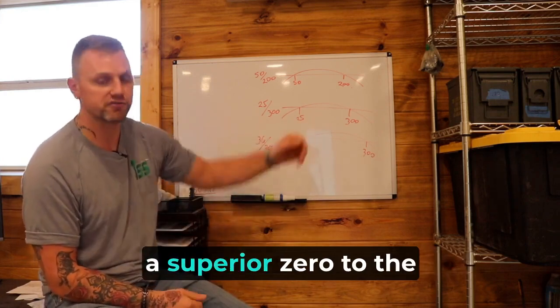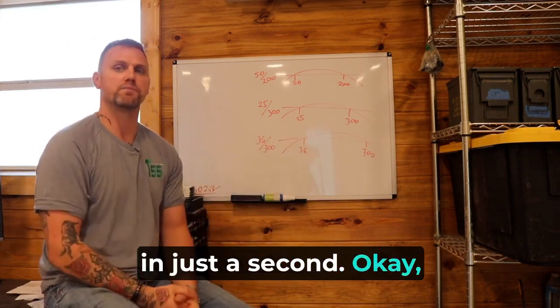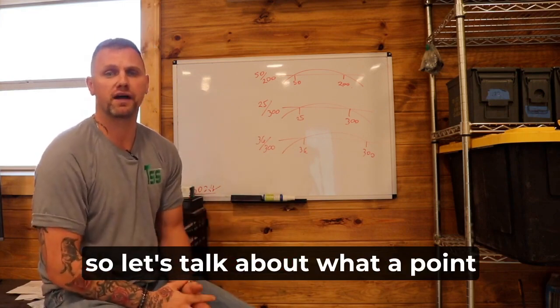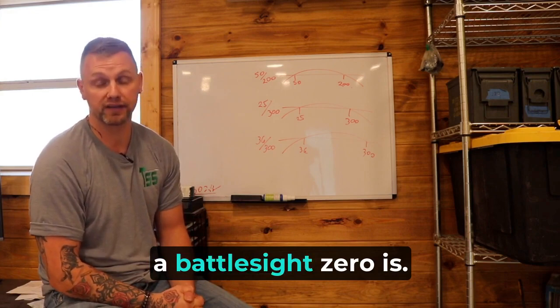But the 36 yard zero is actually a superior zero to the 25 meters zero. And we'll talk about why here in just a second. So let's talk about what a battle sight zero is.